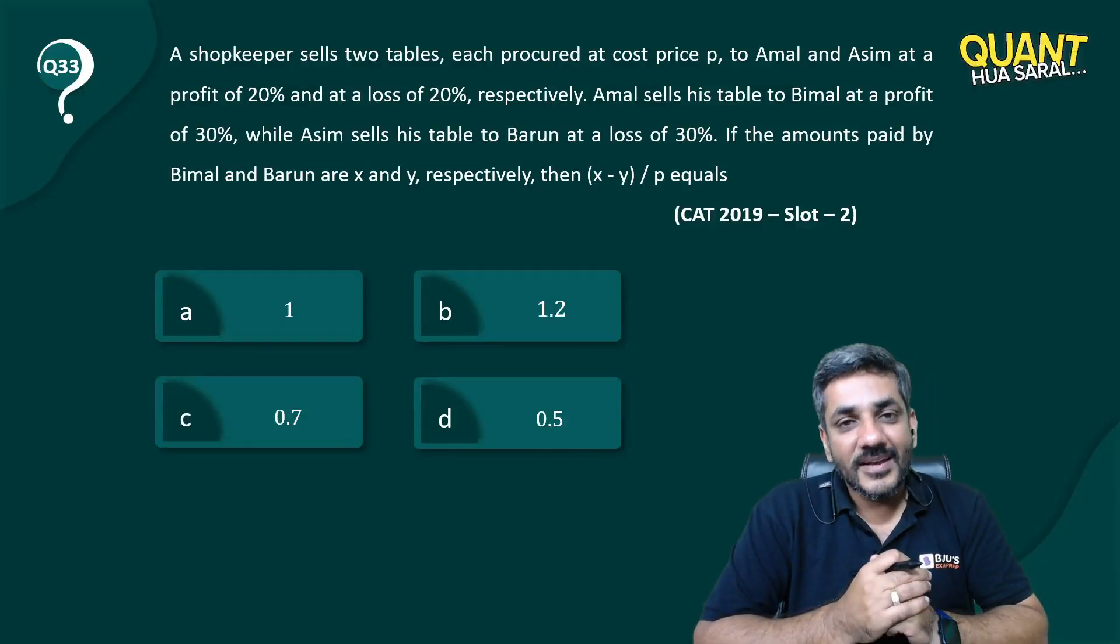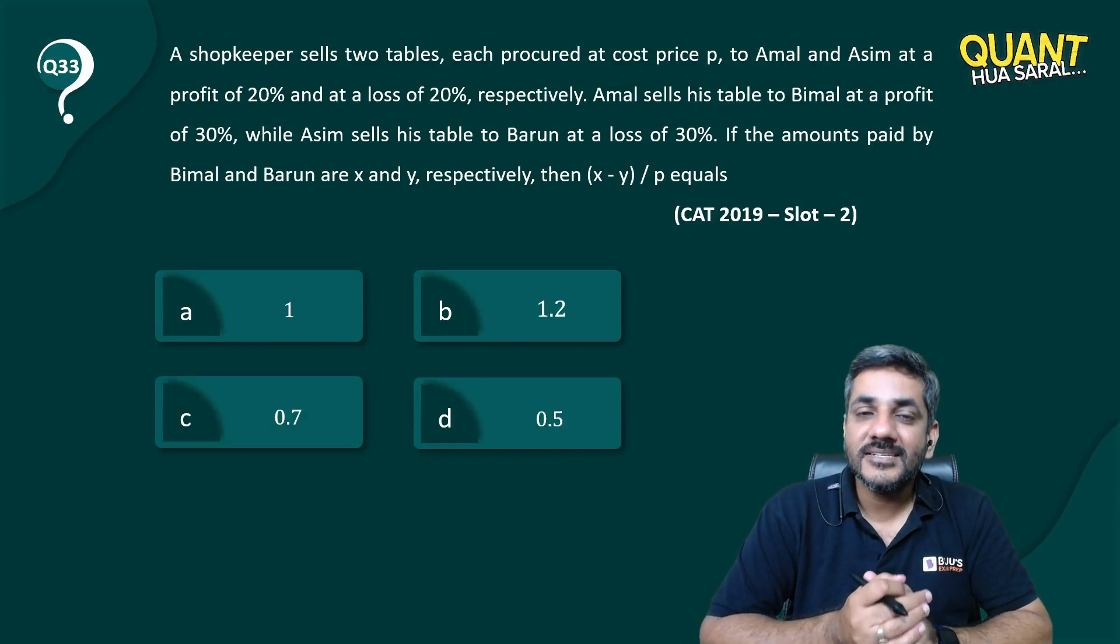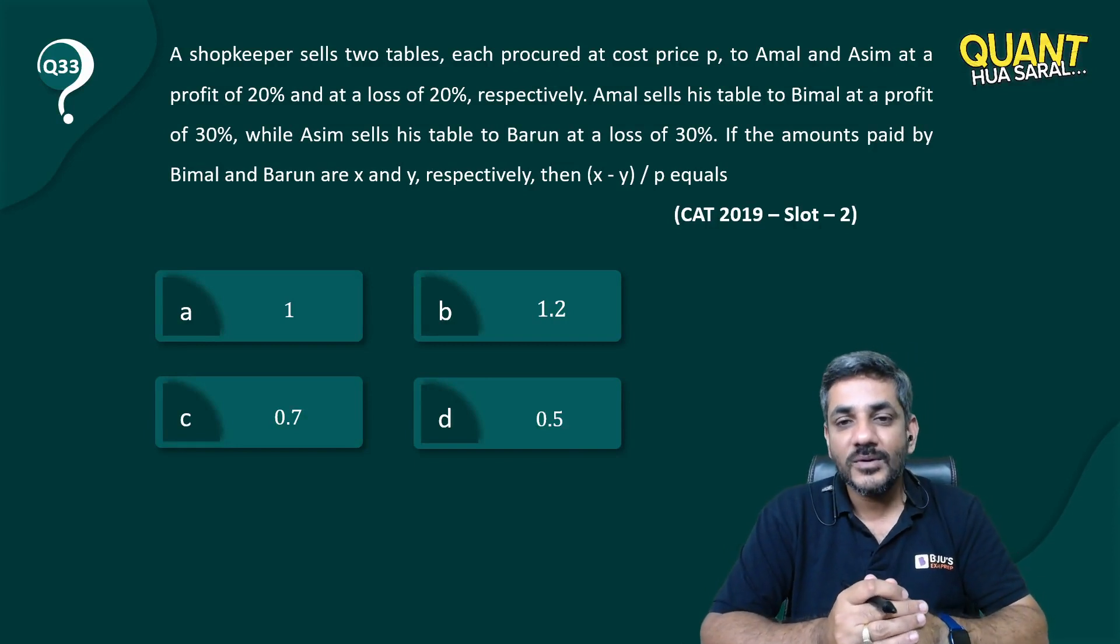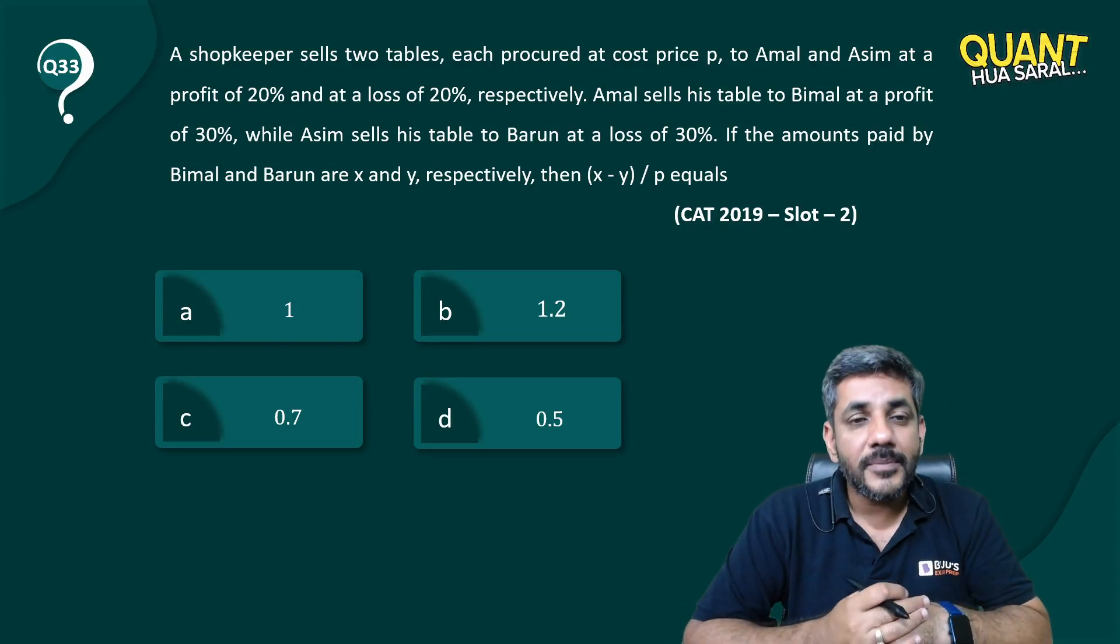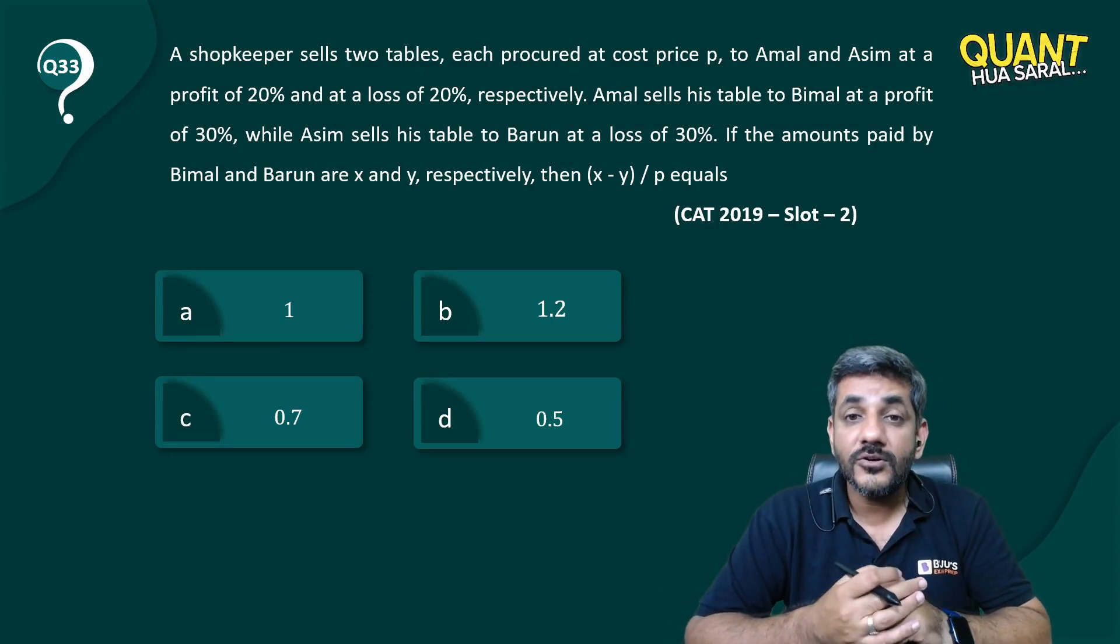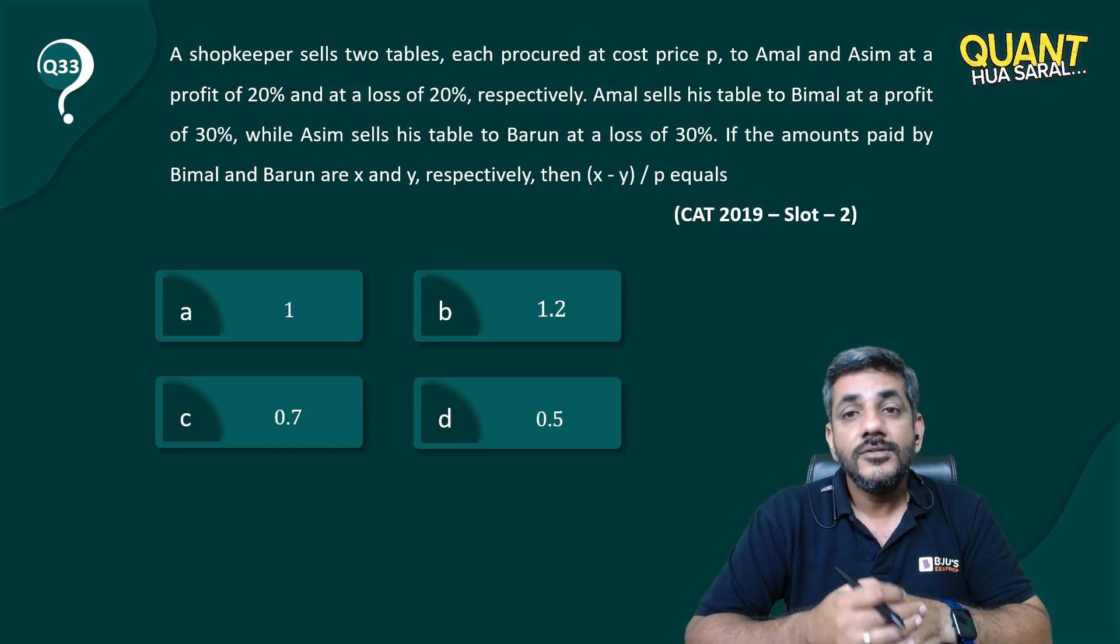Hi everyone, here is question number 33 from the series Quantversal, once again a question from CAT 2019 Slot 2. Let's start discussing this. A shopkeeper sells two tables, each procured at cost price P, to Amal and